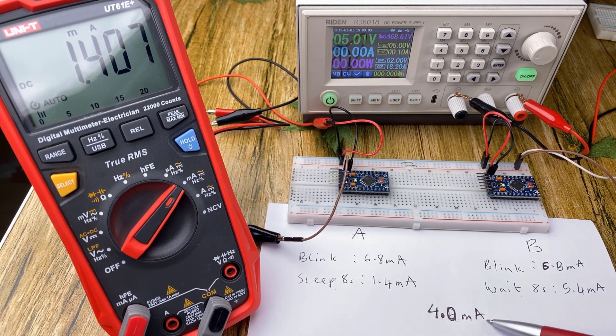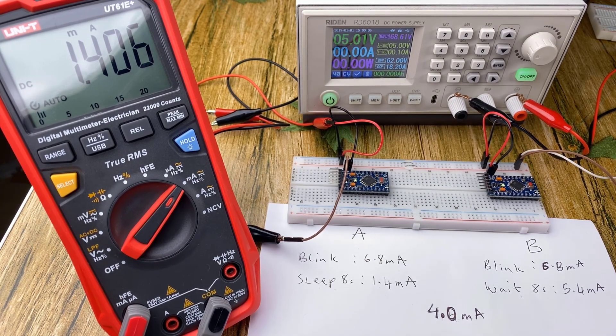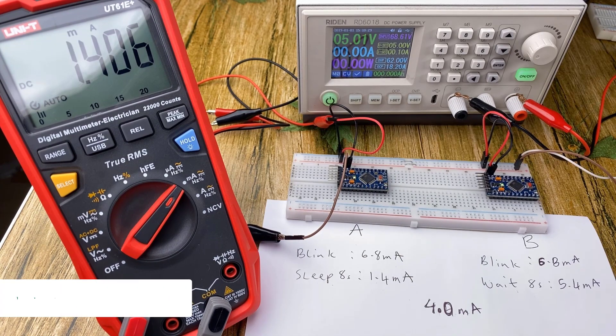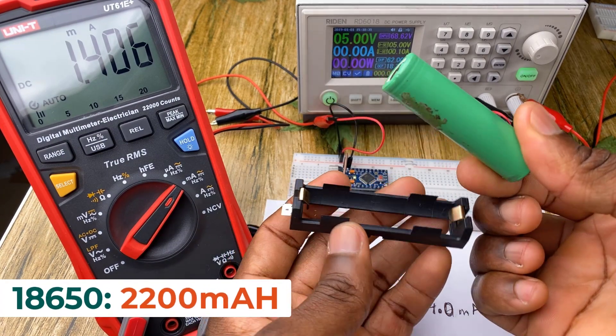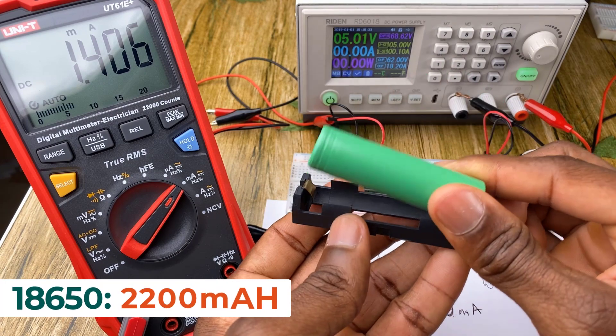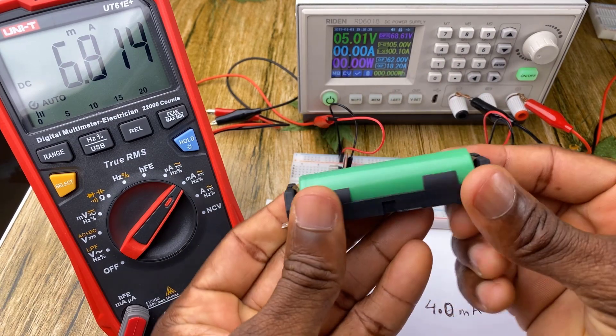To see how significant 4 milliamps of current is, we would have to use a duration calculator. Let's first imagine we use this 2200 milliamp hour 18650 battery for our test. Let's start with setup B.